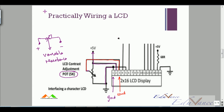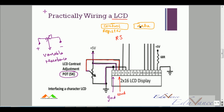Pin number four is the register select (RS). In the LCD there are two registers: a control register and a data register. When I need to send control instructions such as clear the LCD or shift the cursor, I send to the control register by making RS = 0. If I need to send data — for example to display the character 'A' — then RS = 1.